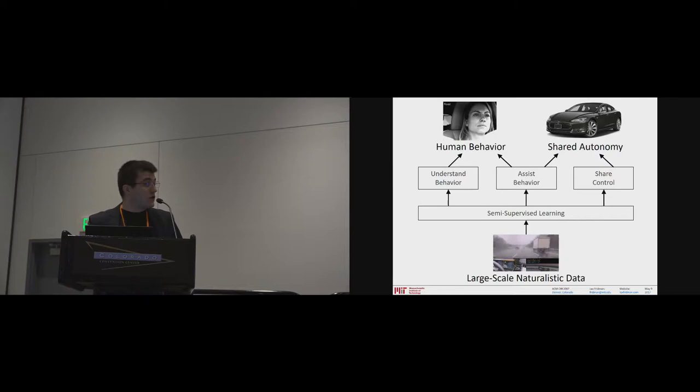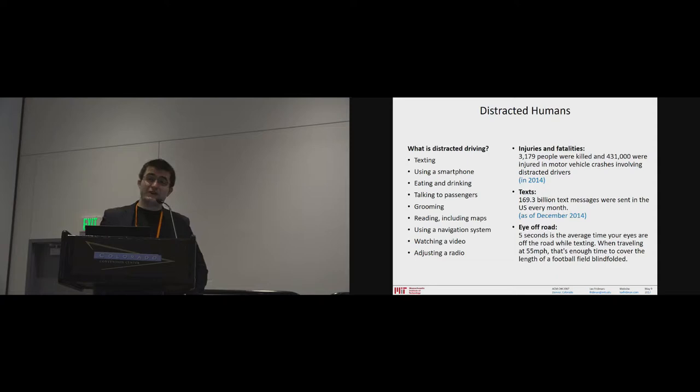So why is this important? We want to convert large-scale naturalistic data of the kind I'll talk about today and the kind we're aggressively collecting at MIT in mostly Tesla vehicles at this point. We want to convert that into three things. One, understanding of what drivers actually do, where they look around, where their body goes in the car during autonomous driving and during fully manual driving. Then we want to design systems, real-time systems, that take that behavior and in real-time assist the driver in sharing control or in coaching the driver how to behave more safely. And then finally, shared autonomy, L2, L3, towards L4, automation of the vehicles. So when the driver is incapable of controlling the vehicle, the vehicle will be able to take control from the driver to keep them safe.